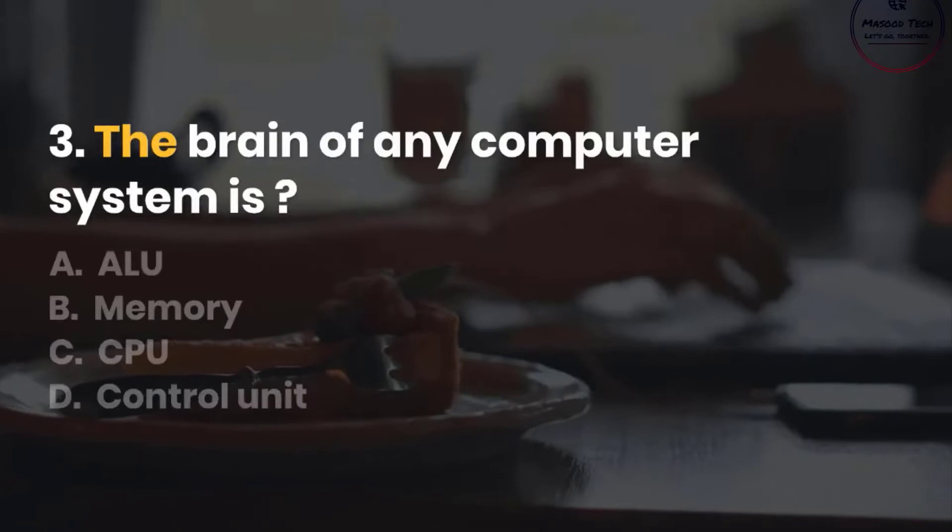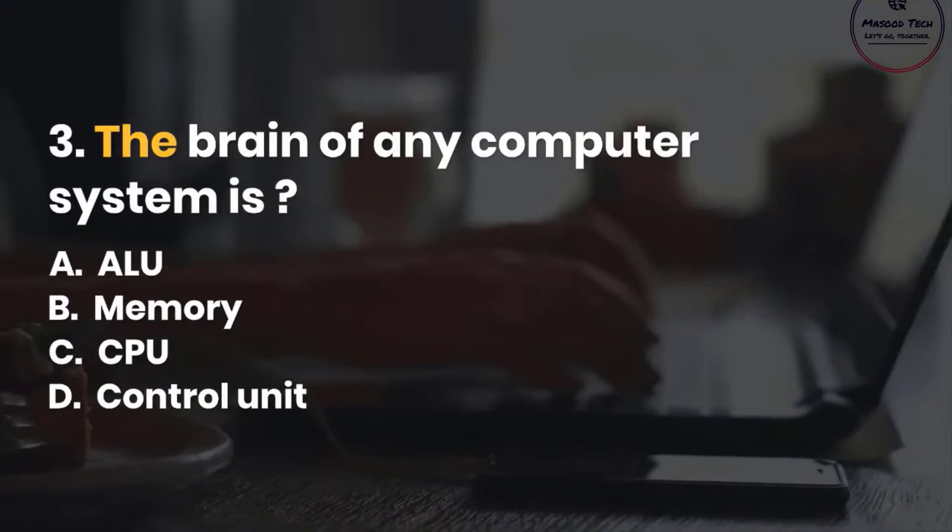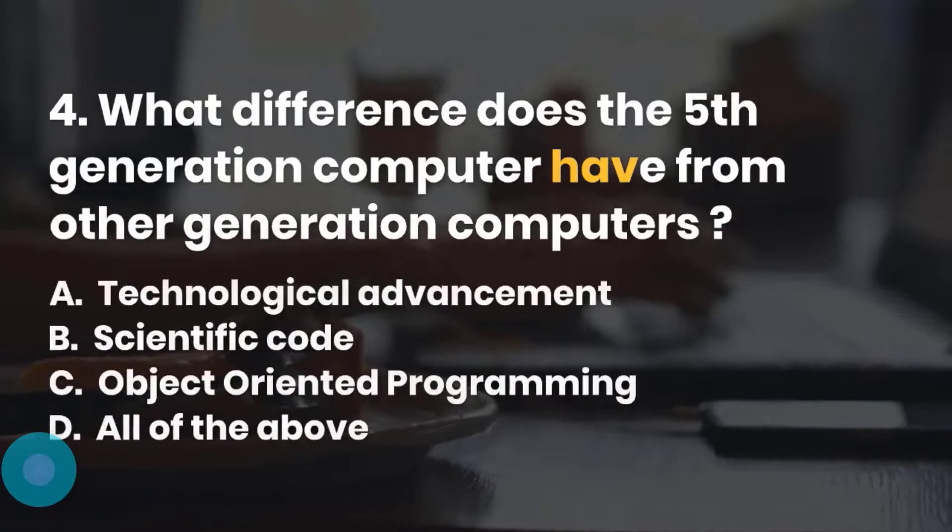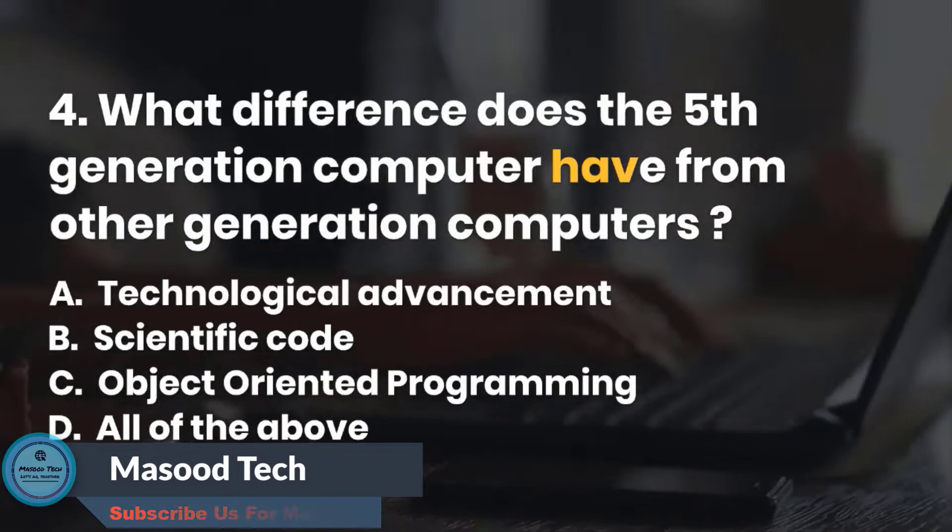Number 4. What difference does the 5th generation computer have from other generation computers? A. Technological advancement. B. Scientific code. C. Object-oriented programming. D. All of the above. Correct answer is A.